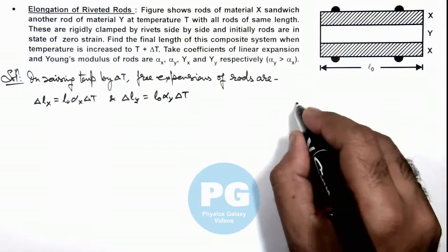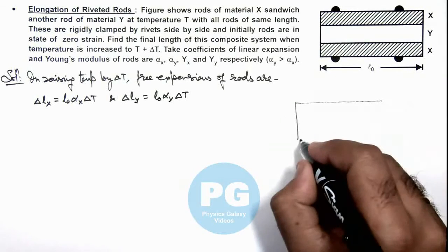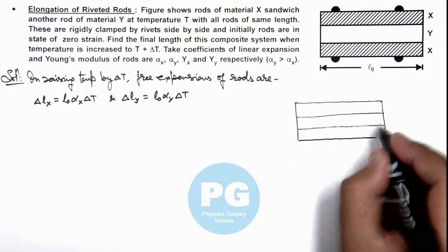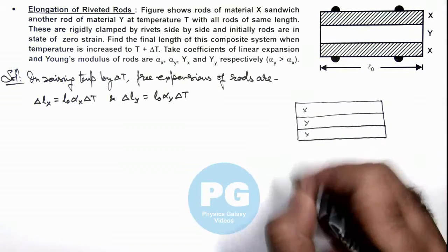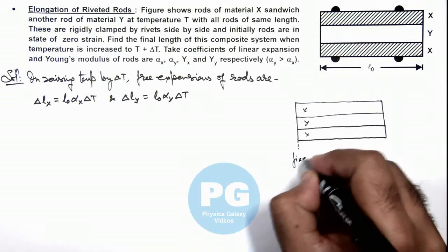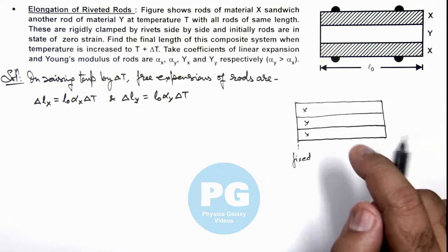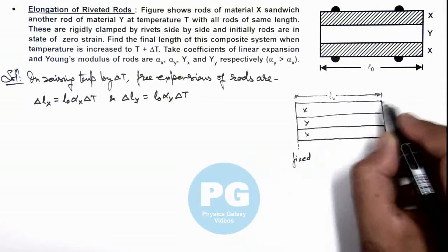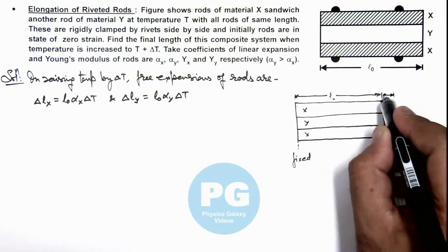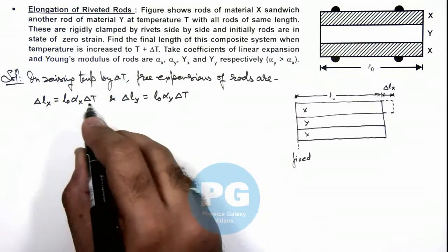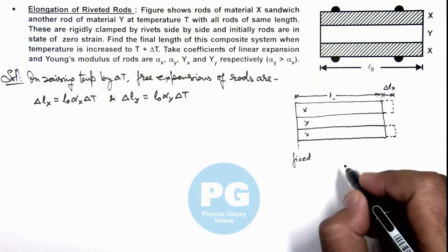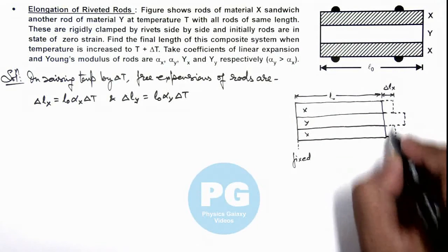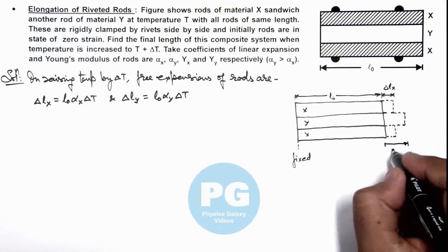Here we can redraw the figure to analyze how the overall expansion will take place. If we consider the left end of the rods to be fixed — this is X, this is X, and this is Y — and the rods are allowed to expand only on one side, then compared to initial length L₀, X will expand to a state of delta L_x. If not riveted, this rod will also expand to this state, but Y, as alpha_y is greater than alpha_x, will expand more to a state delta L_y.